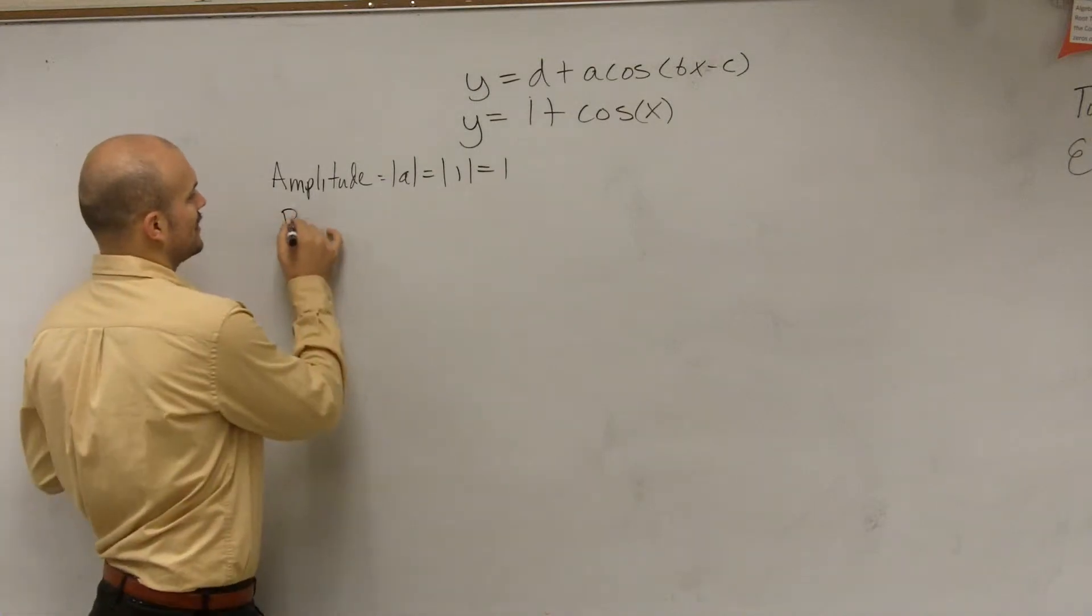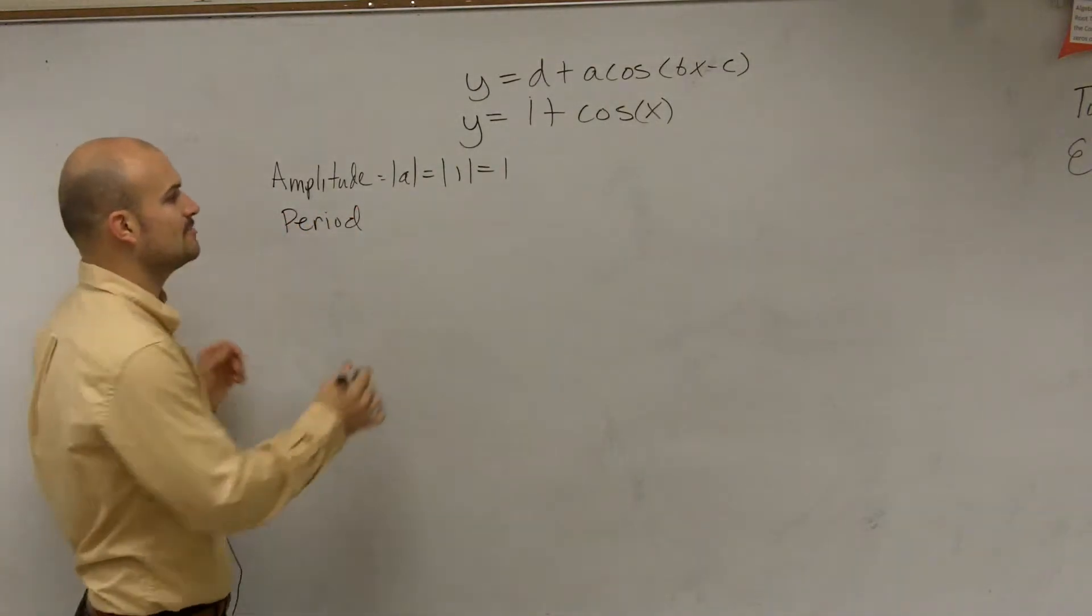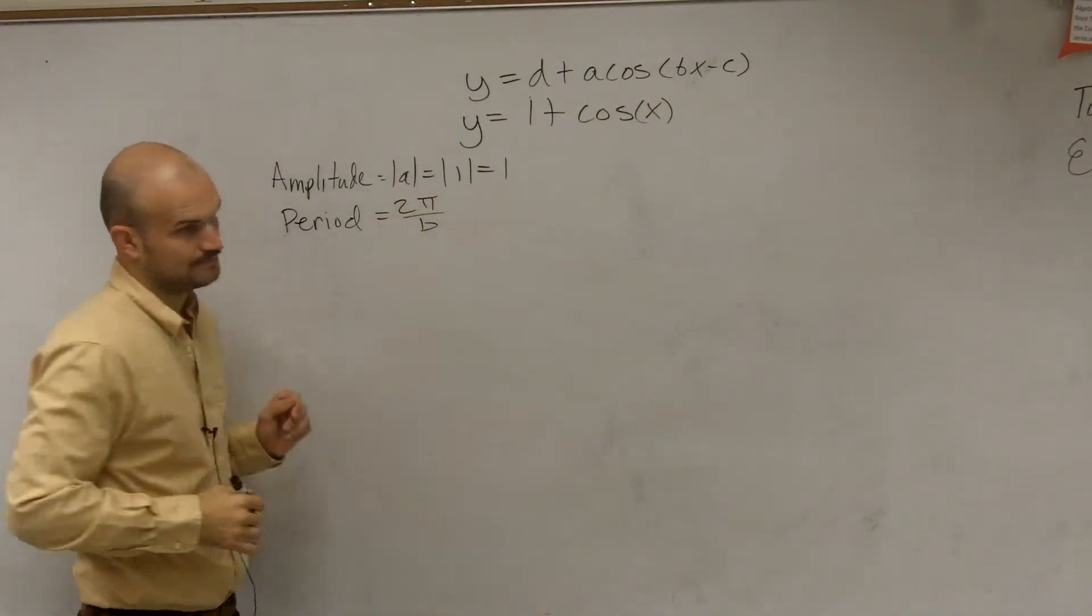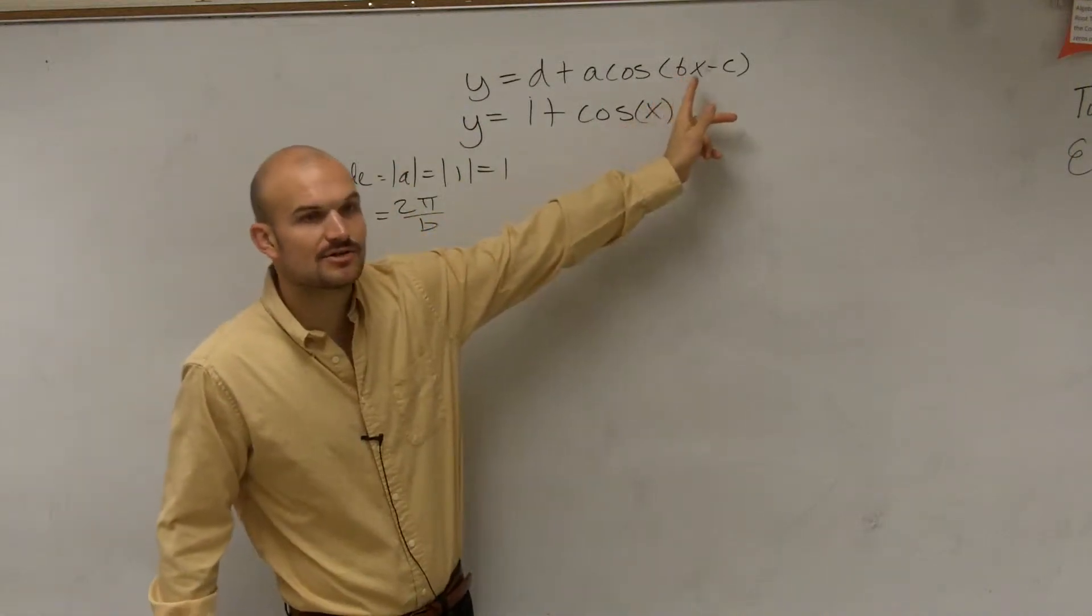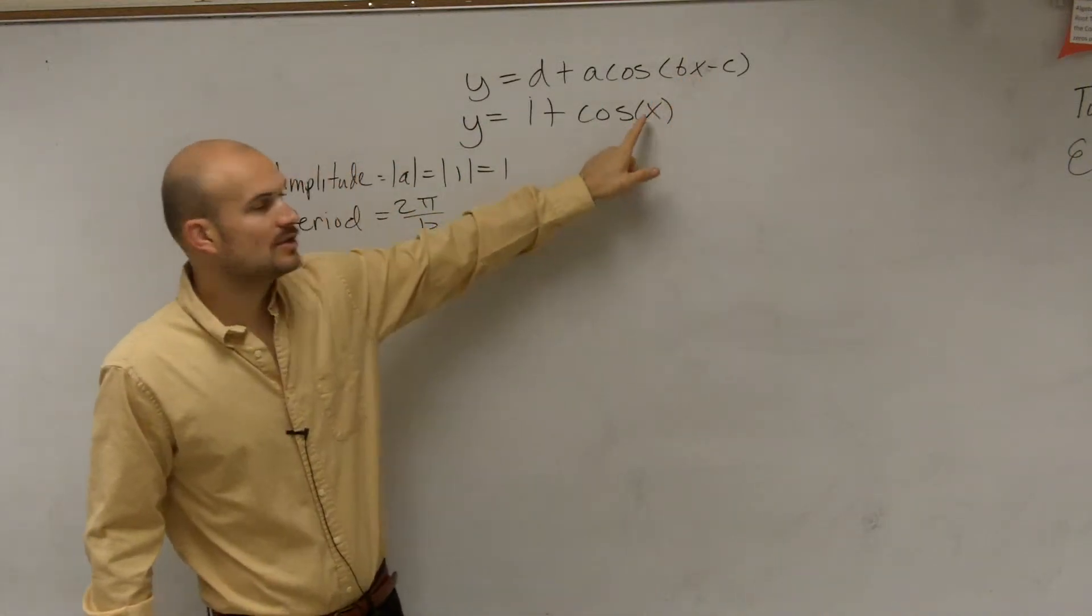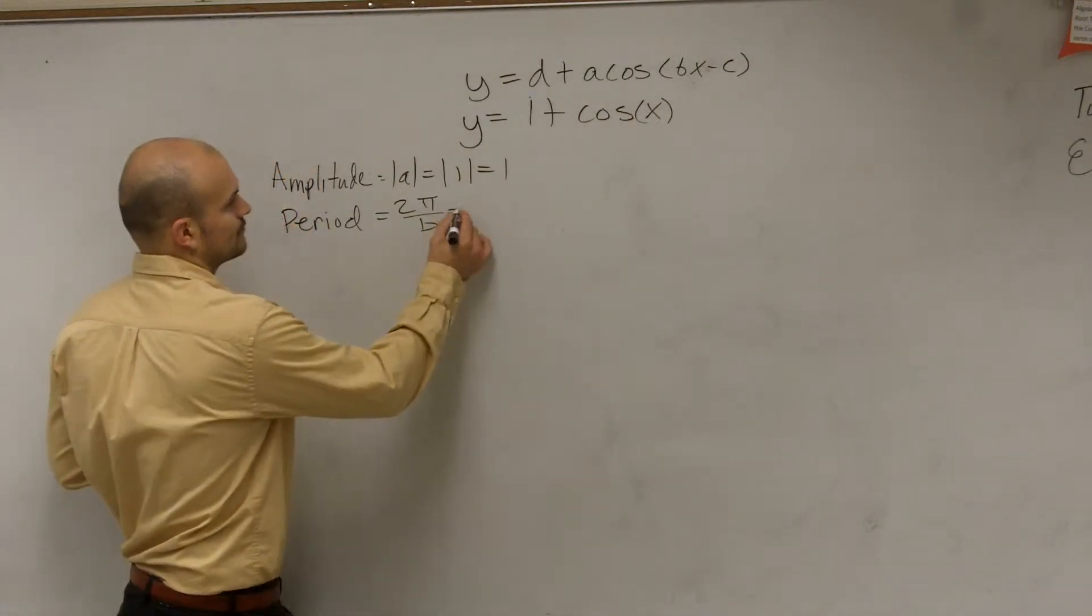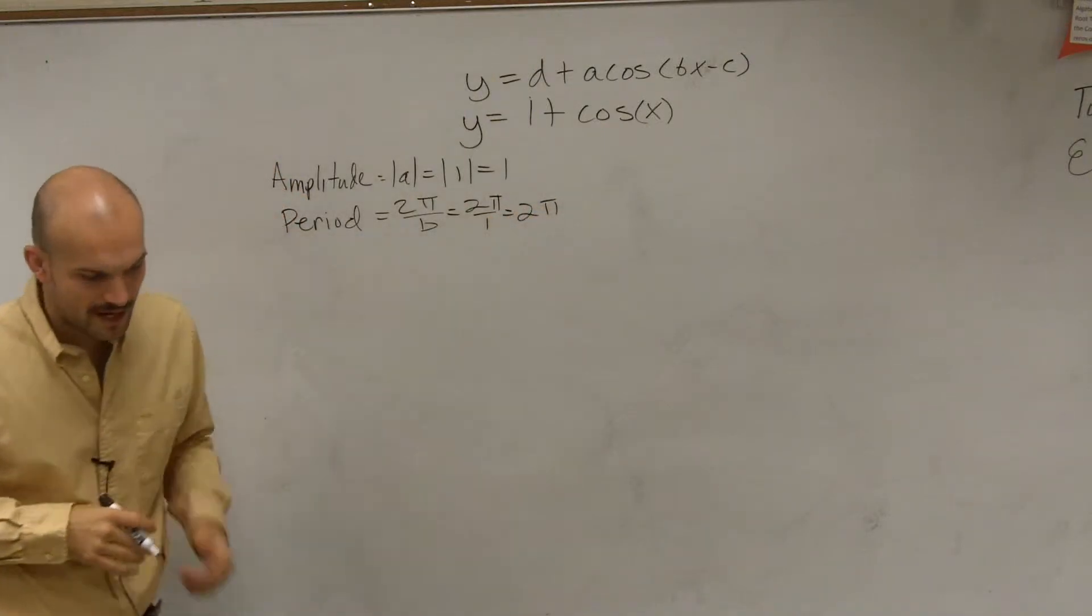So we have absolute value of 1, which equals 1. Then we're going to take a look at the period. And remember, our period is going to be 2 pi divided by b. So you go ahead and take a look at this, and you can see b is going to be your coefficient of x. So I look inside my function, and I see the coefficient of x, again, is 1.